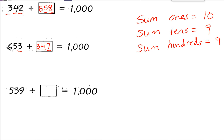Let's try one more. 9 plus something equals 10 — 9 plus 1 equals 10. 3 plus 6 is 9, and 5 plus 4 is also 9. So the answer is 461.